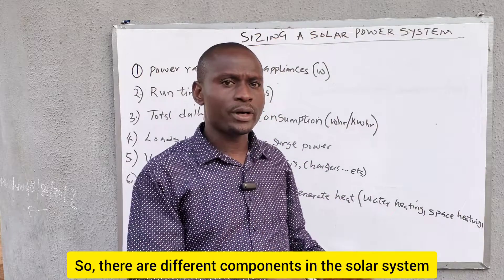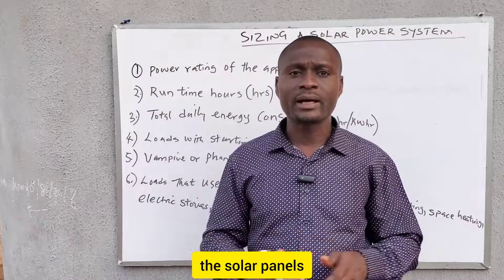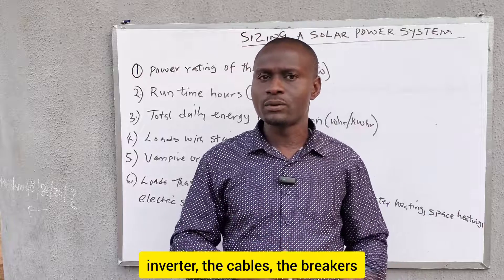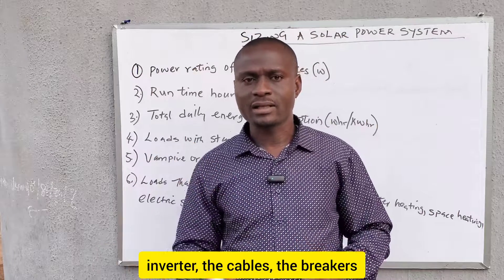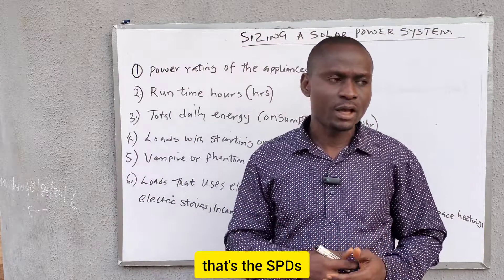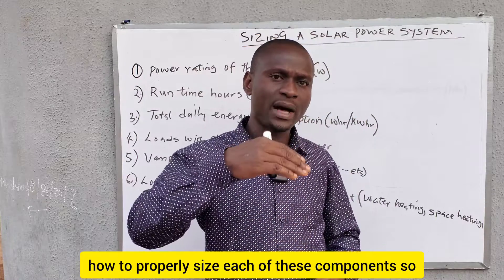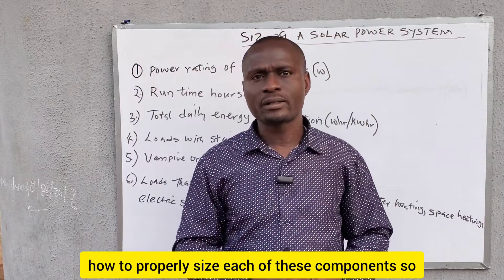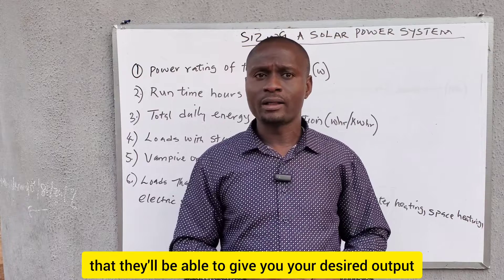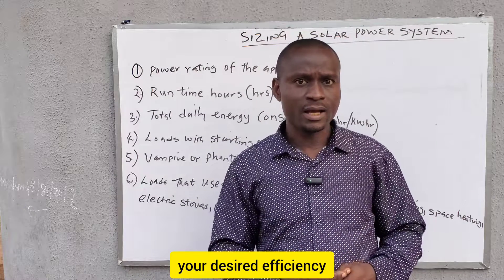There are different components in the solar system: the solar panels, the charge controller, the batteries, the inverter, the cables, the breakers, and such protective devices as the SPDs. You need to know how to properly size each of these components so that they'll be able to give you your desired output and your desired efficiency.